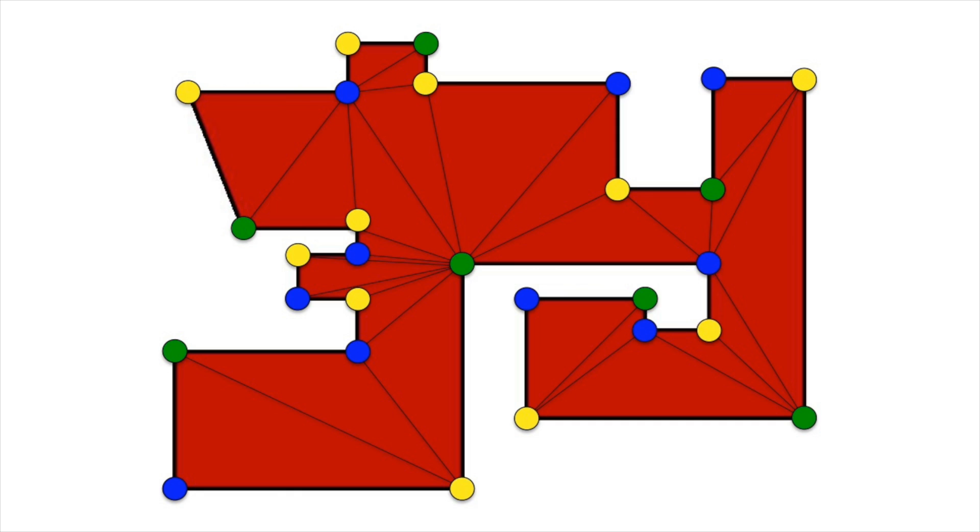Now choose one of these colors, say blue. Since each triangle has a blue corner, placing guards at these points guarantees that each triangle, and thus the whole gallery, is being watched.